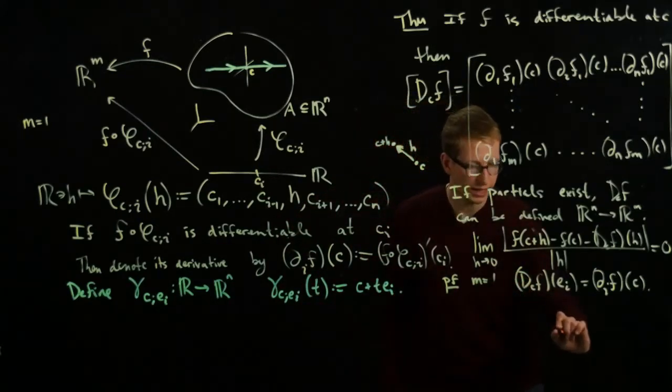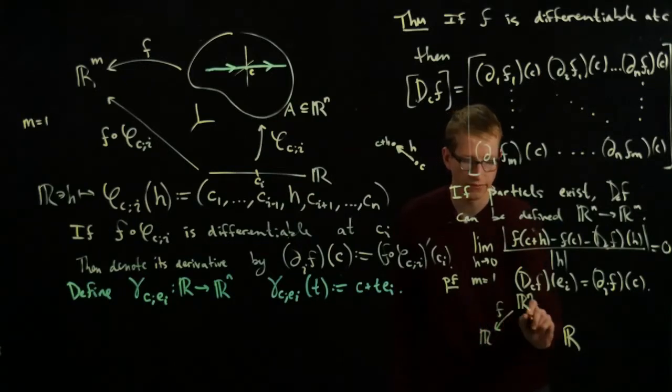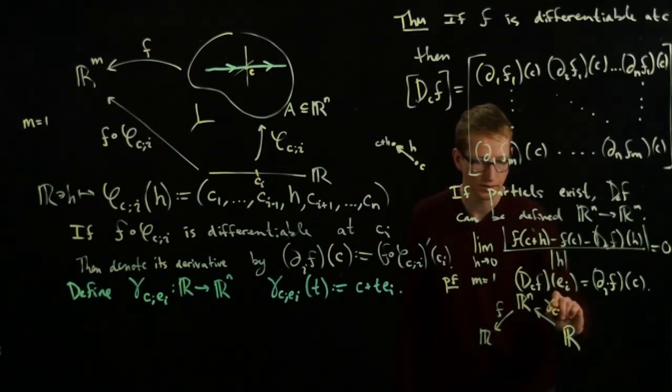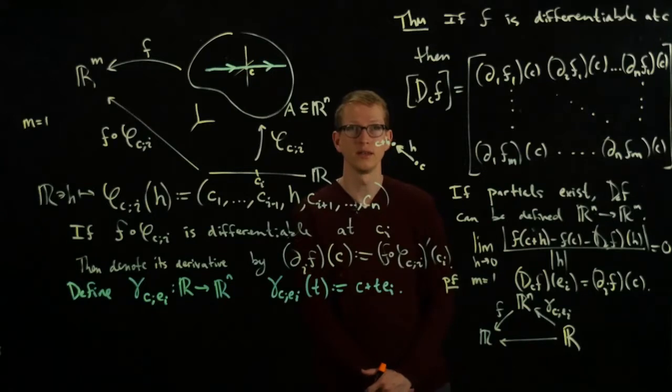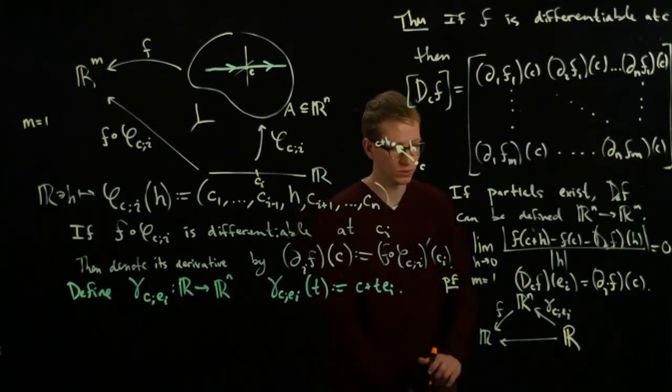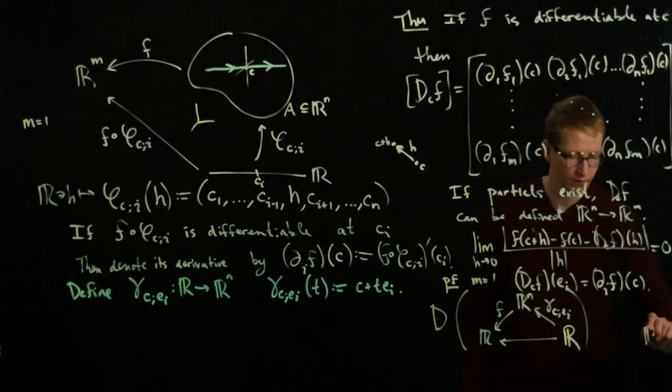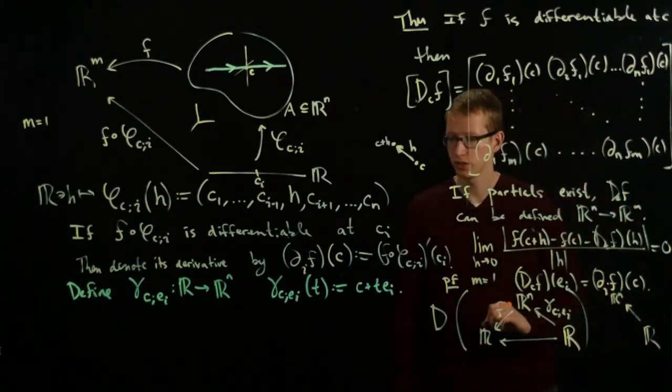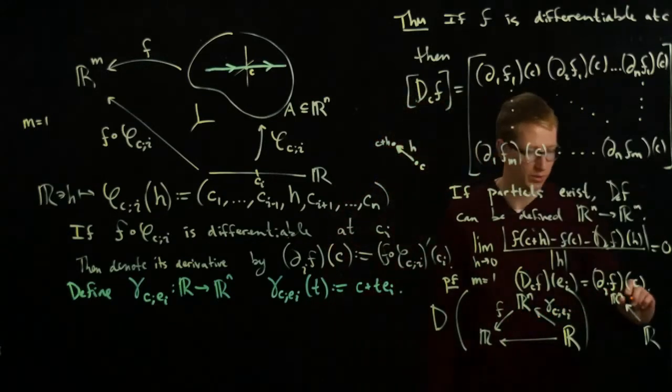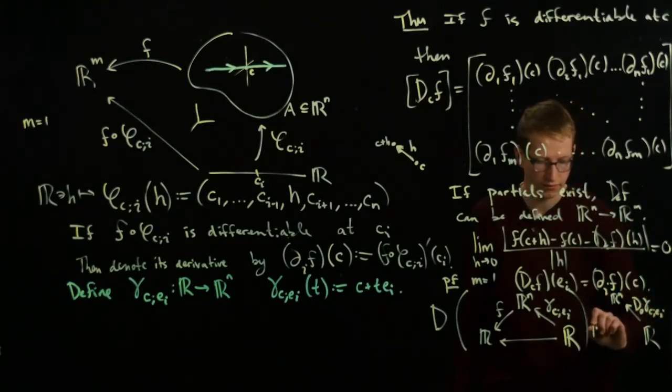What we can do is look at the composition of these two functions. We have a function from R to R^n back to R. Here is F, here is our function γ_C,e_i, and this is our composition function. When we take the derivative of this thing, this will give us the partial derivative in the i-th direction.